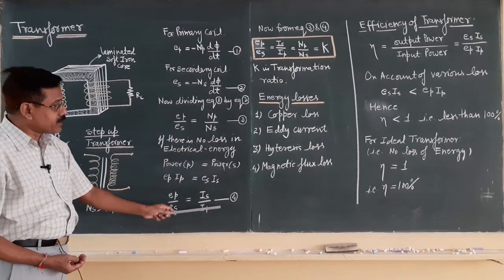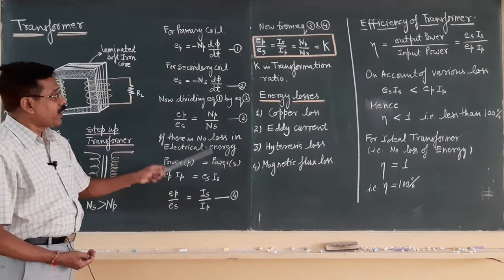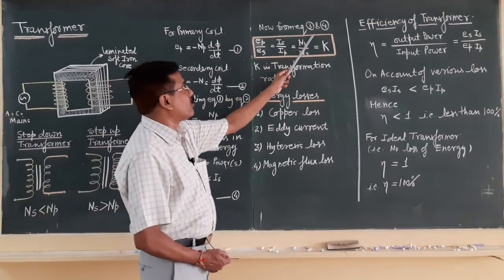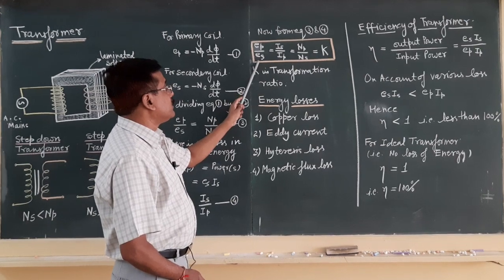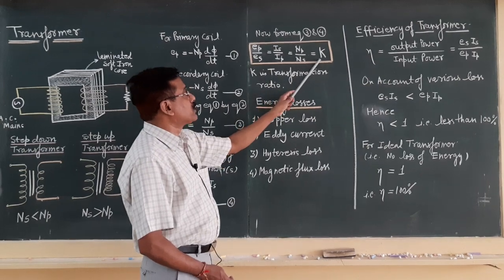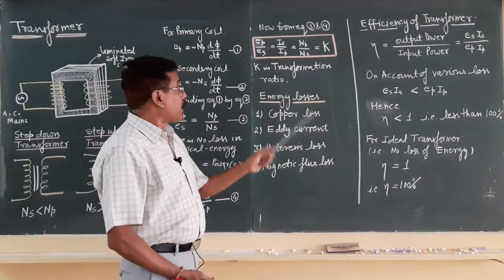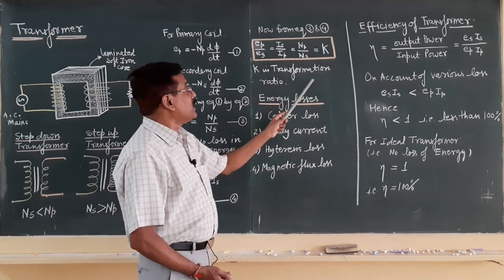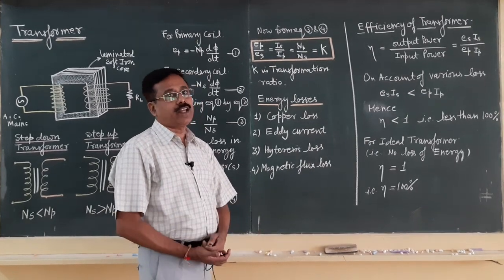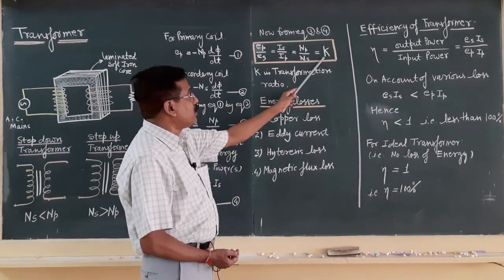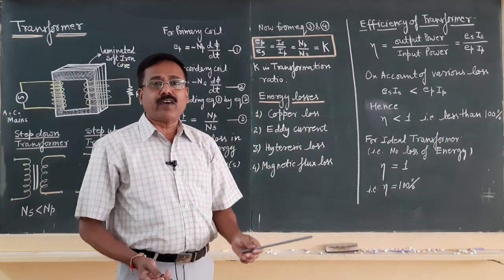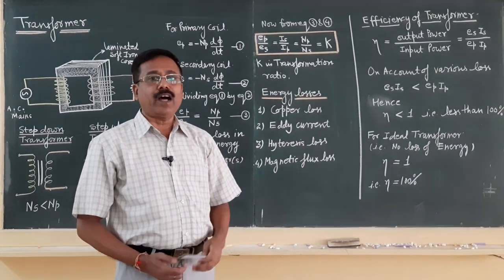Equations 3 and 4 can be equated since the left-hand side has the same ratio. When we equate them, we have: Ep/Es = Is/Ip = Np/Ns, and this ratio is denoted by capital K. Capital K is known as the transformation ratio, and this transformation ratio decides the nature of the transformer. If K equals 1, then Np and Ns will be equal, meaning the transformer neither steps up nor steps down the voltage.